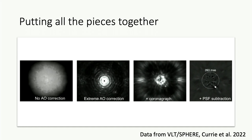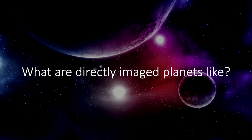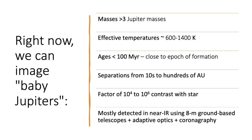Now we'll move on to: what are the planets we find this way like? We have a cohort of a couple dozen planets imaged right now. I often refer to these as baby Jupiters — actually more like baby super Jupiters. They have masses of three Jupiter masses or greater, effective temperatures of 600 to 1400 K, ages of 100 Myr or less, from 10 to 100 AU from their star, and contrasts of 10^4 to 10^6 times fainter than their star. Most detections have been in the near-infrared using 8-meter ground-based telescopes plus adaptive optics, coronagraphy, and post-processing.